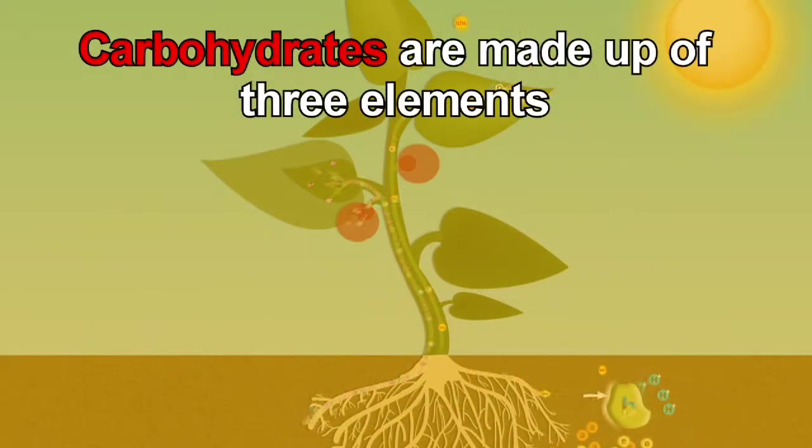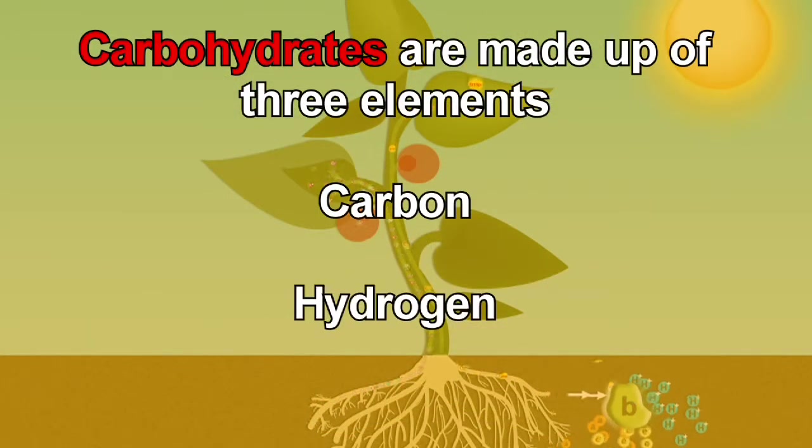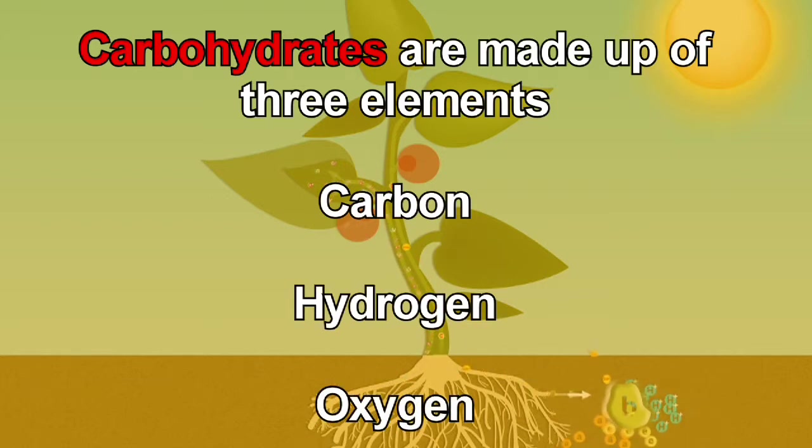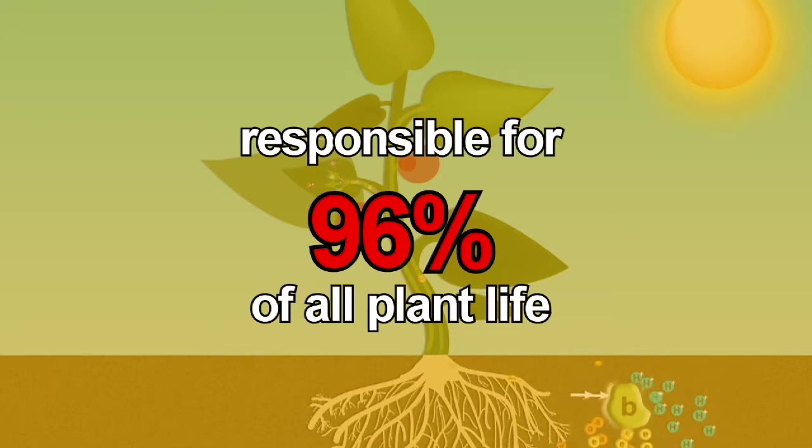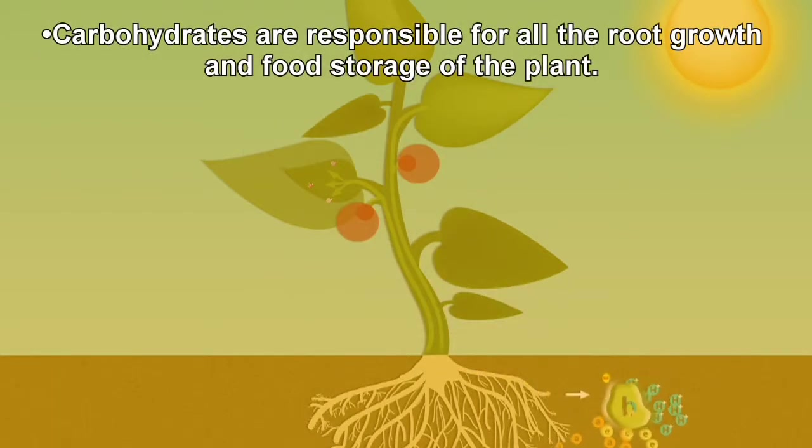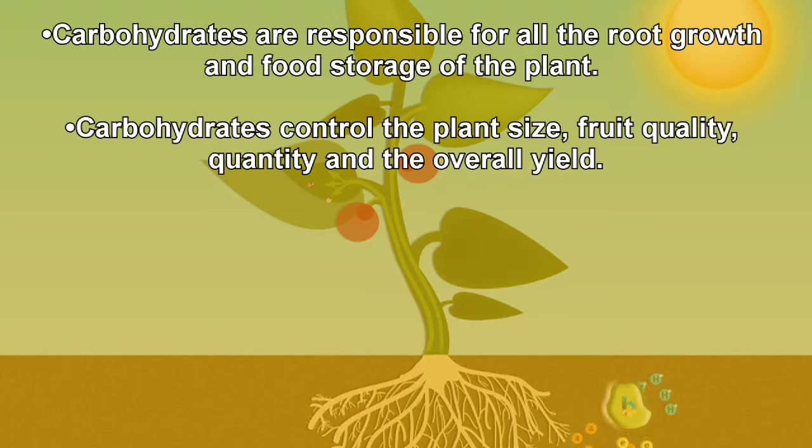Carbohydrates are made up of three elements: carbon, hydrogen and oxygen. These are the essential building blocks responsible for 96% of all plant life. Carbohydrates are responsible for all the root growth and food storage of the plant. Carbohydrates control the plant size, fruit quality, quantity and overall yield.